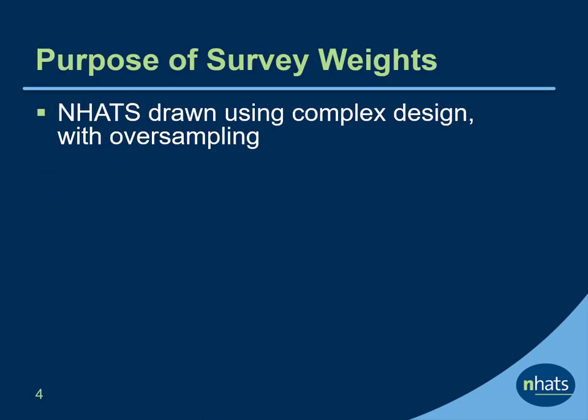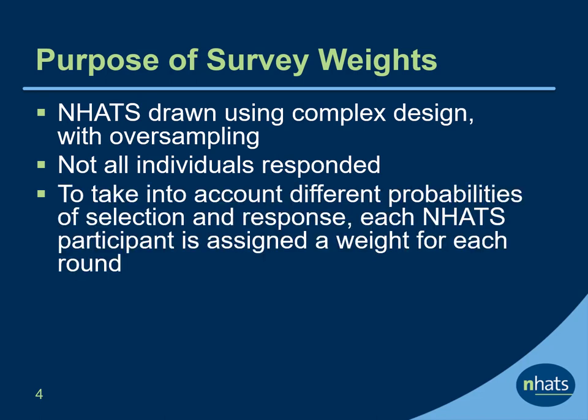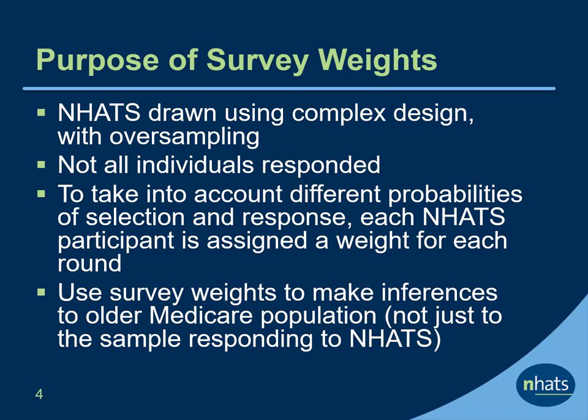The NHATS sample was drawn using a complex design, oversampling individuals at older ages and black individuals. In addition, not all individuals eligible for the study responded, and some groups were more likely to respond than others. To take into account different probabilities of selection into NHATS and different probabilities of responding to NHATS, each NHATS participant has been assigned a weight for each round. To make inferences about older Medicare beneficiaries and not just the sample responding to NHATS, survey weights are needed.